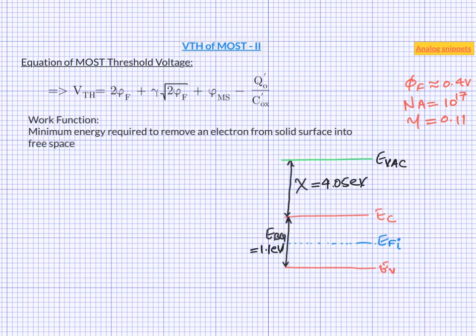In this diagram, we have energy of free space over here and this is the conduction band of the silicon. And difference between the two is electron affinity. Work function is the difference between energy of vacuum and the Fermi level. Since in a pure silicon, Fermi level sits in the middle of the energy band gap, we can derive a relation between these quantities.